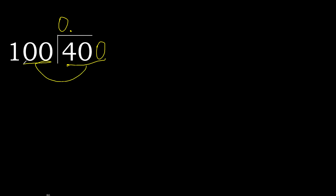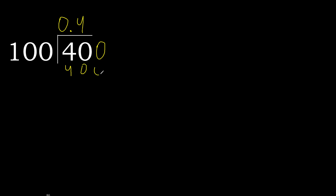400 is not less. Therefore with 400: 100 multiplied by which number is nearest to 400 but not greater? 100 multiplied by 4 is 400 — is not greater. Subtract: 0. Therefore finish it.